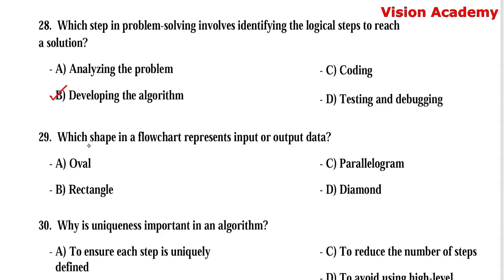Question number 29: Which shape in a flowchart represents input or output data? Option A, oval. Option B, rectangle. Option C, parallelogram. Option D, diamond. Here, option C, parallelogram, is the right answer.